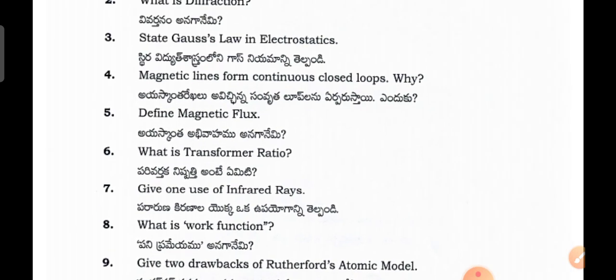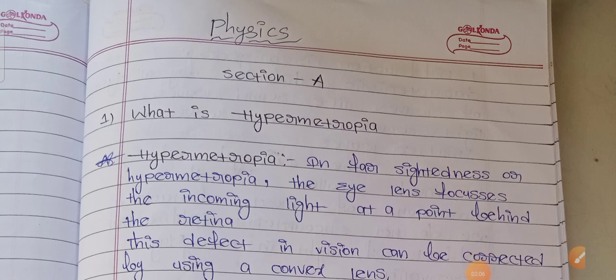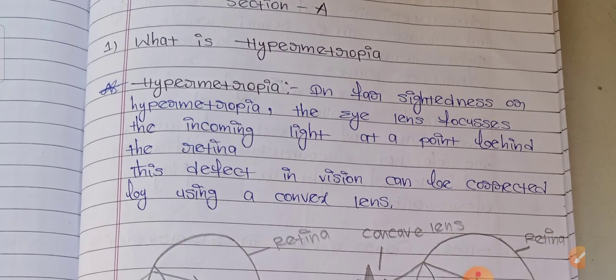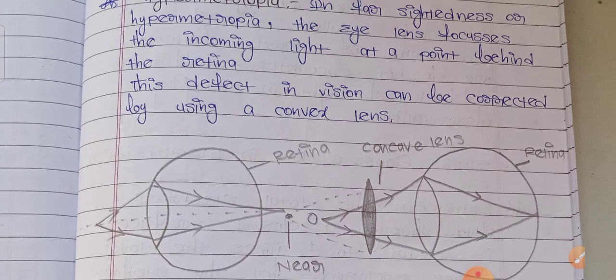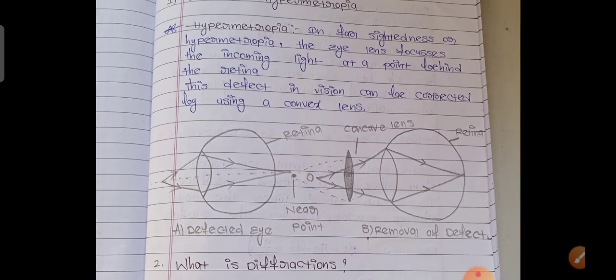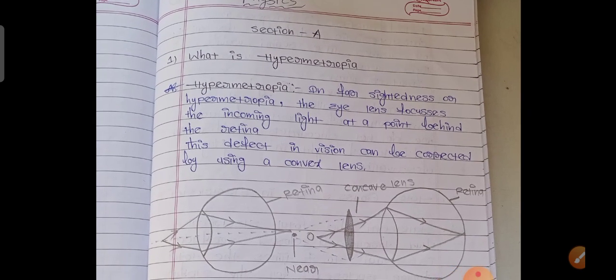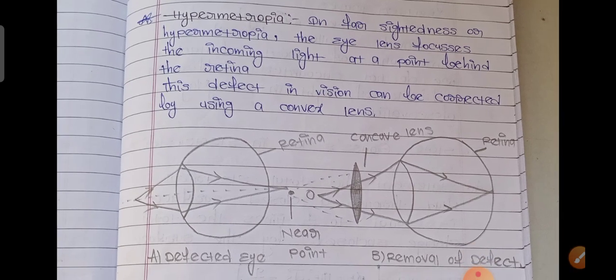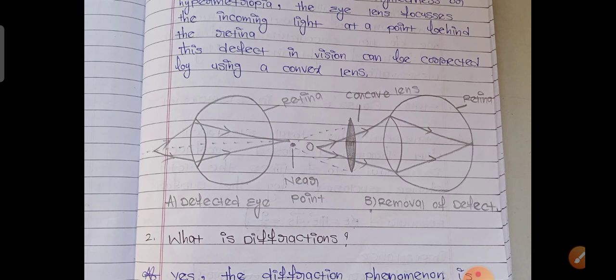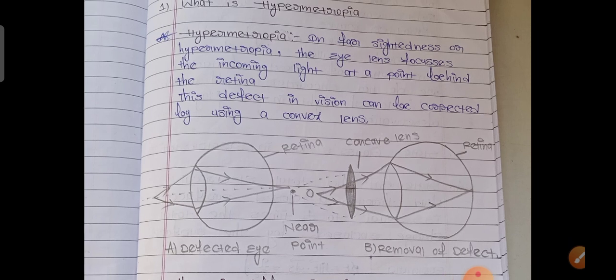So this is the question paper for intermediate vocational secondary students in the bridge course for physics. Now let me show the answers. These answers are applicable for MPC and BIPC students. I have already shown the model question paper; according to those questions I am showing the answers. For Section A, each question carries one mark. Try to take a screenshot or note the side headings of each question. Don't leave any question — try to learn at least one-word answers.